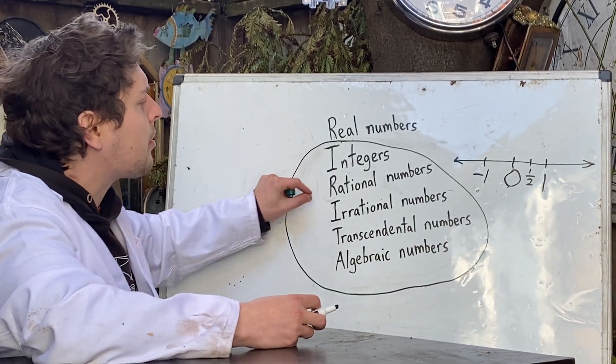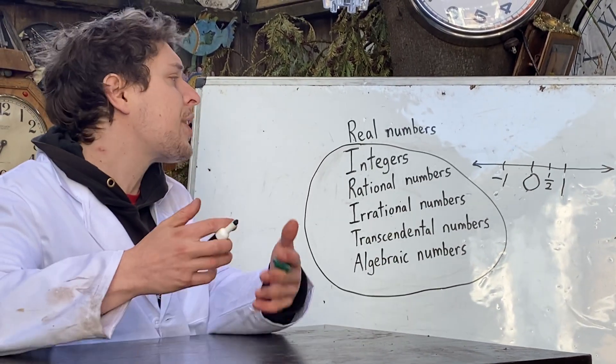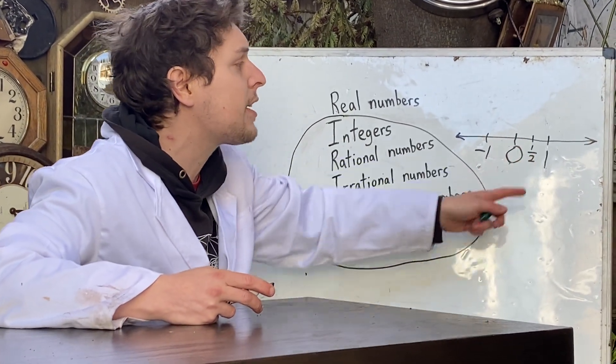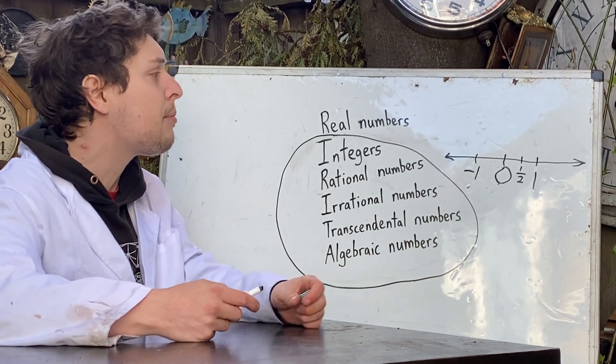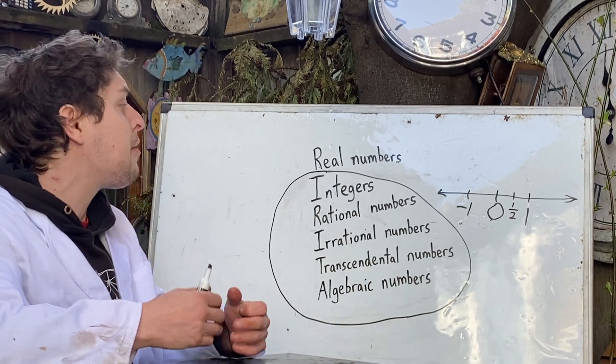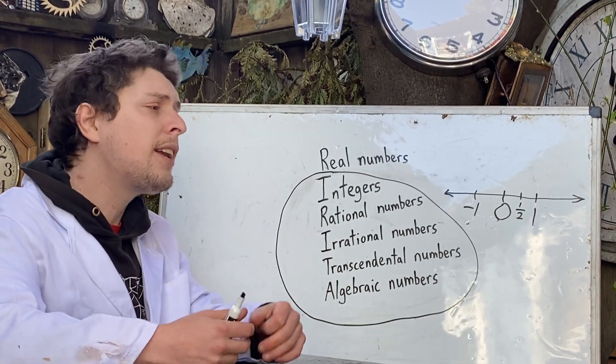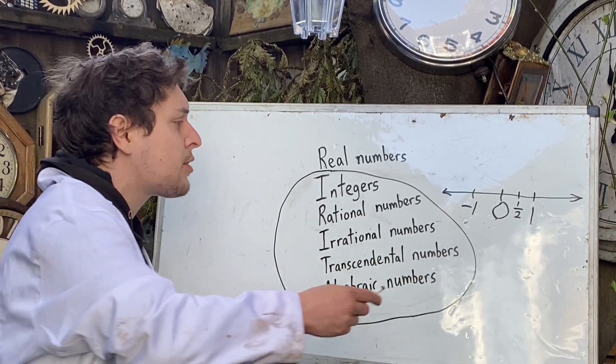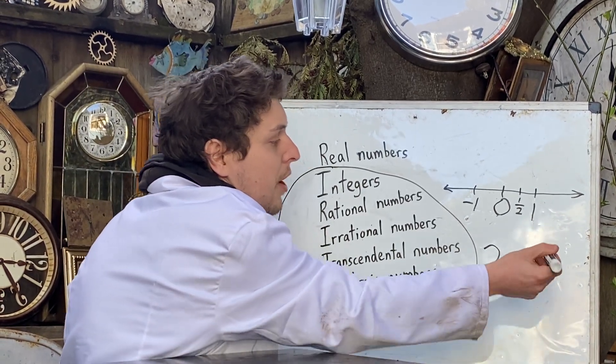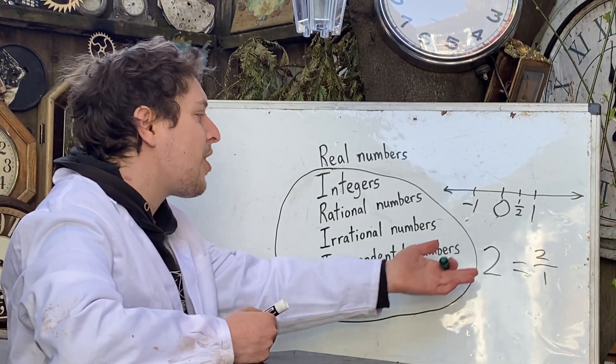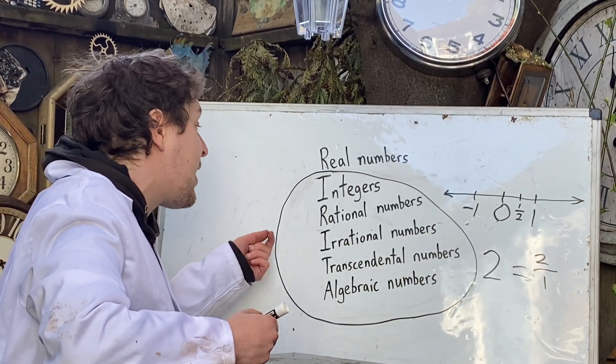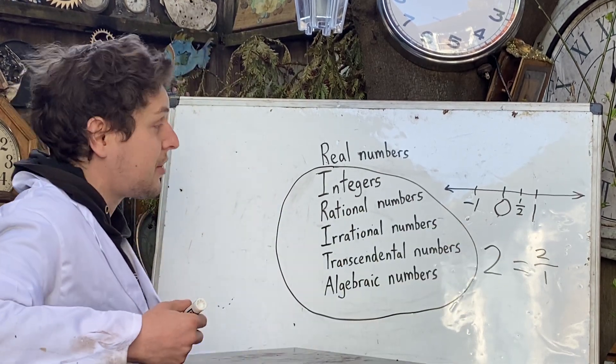The rational numbers are the numbers which can be written as a ratio, which is in the name, of two different integers. So you need to be able to have an integer on your numerator, an integer on your denominator, and then you are a rational number. And it does include the integers, because we could say that the number two could be written as two over one. And so the integers are included in this definition of being able to be a ratio of two integers.